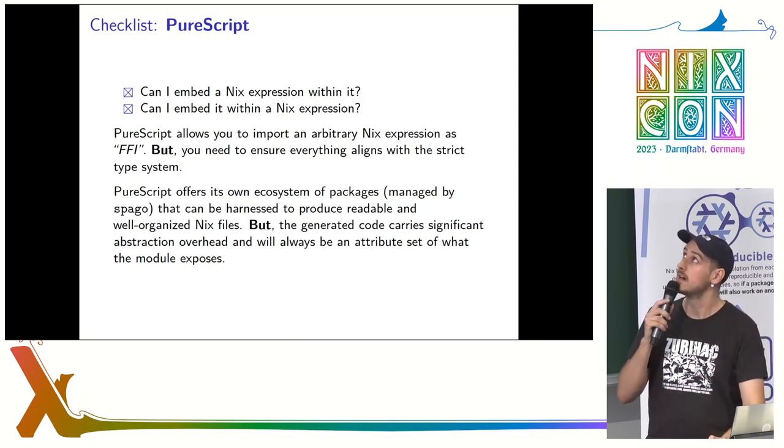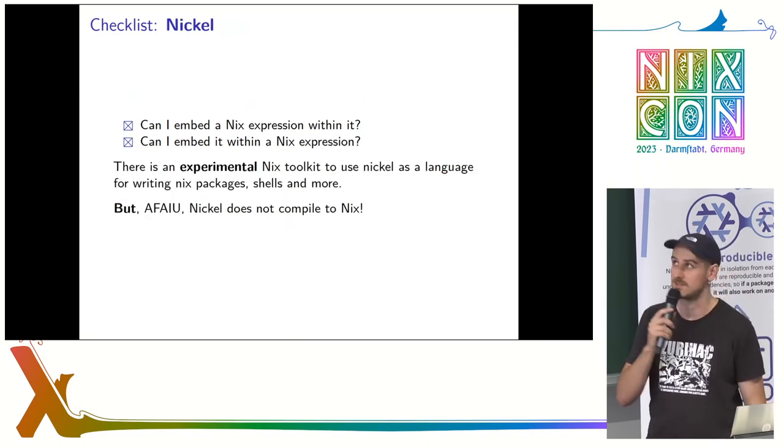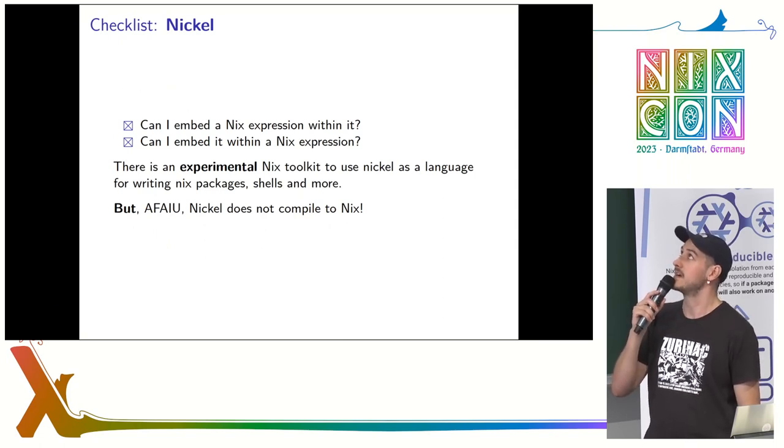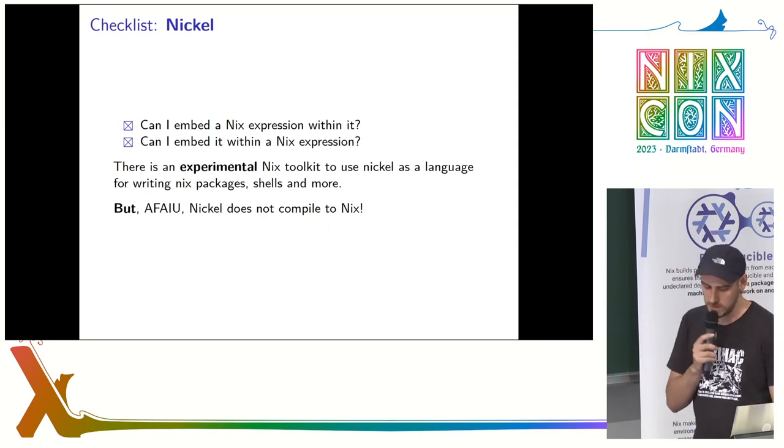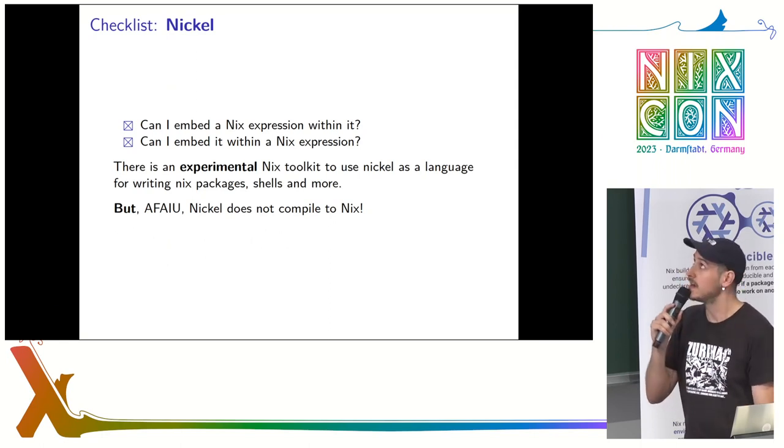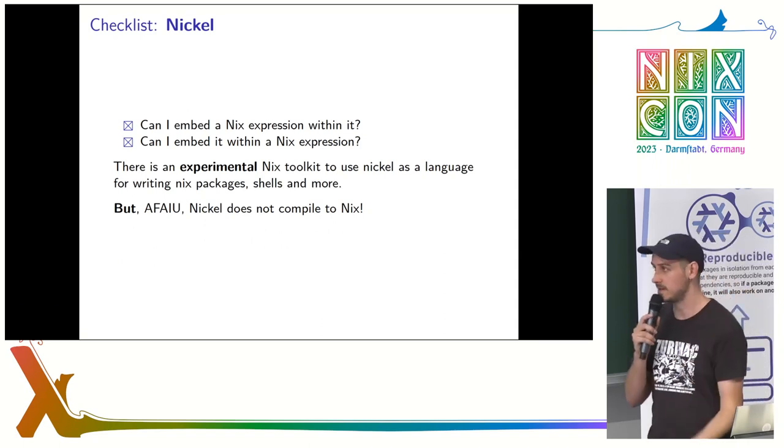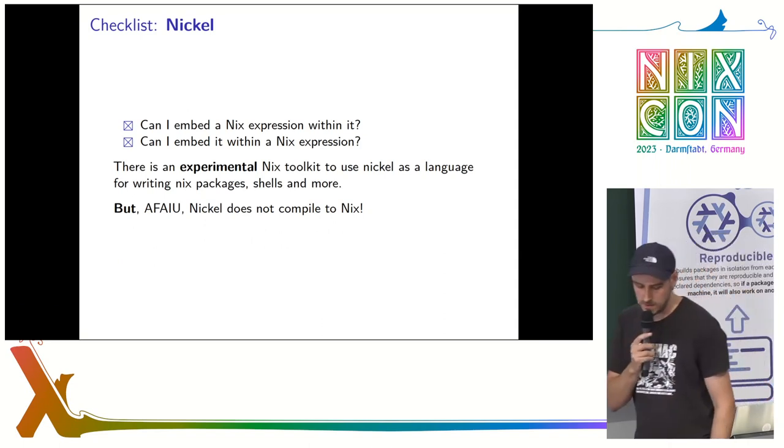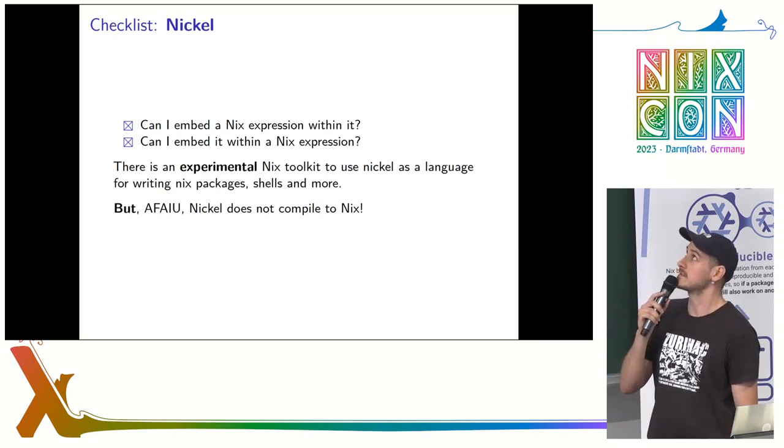And the last thing is Nickel, which is a bit of a cheat, because it was made with this purpose in mind. There is an experimental Nix toolkit integration, you can use it, and it will do exactly what you want to do for a language that could replace Nix. It's experimental, it's hard to use, it's not really documented, but it exists, and there is a bit of a lie here, because Nickel does not really compile to Nix. It's compiled to JSON interpreted representations, and then you load it, and I think there are other talks about that.